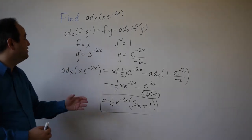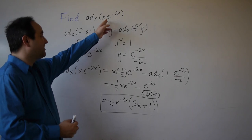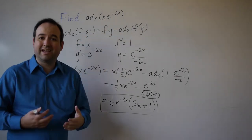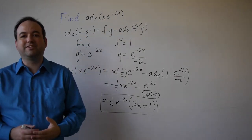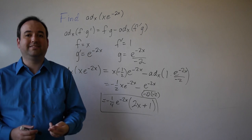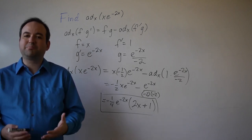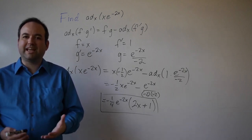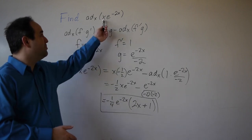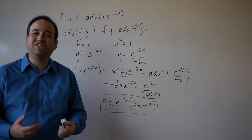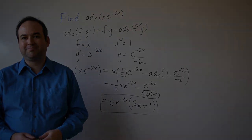Our anti-derivative is going to be negative one-fourth e to the negative 2x times 2x plus 1. Now, if I'd had to anti-differentiate x squared times e to the negative 2x, I'd have had to use integration by parts twice. In general, the number of times you're going to have to use integration by parts equals the power to which x is raised.